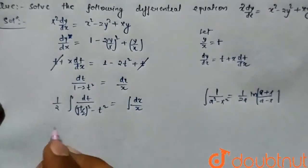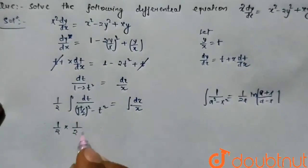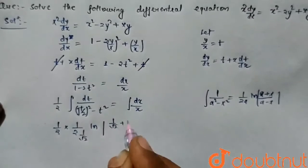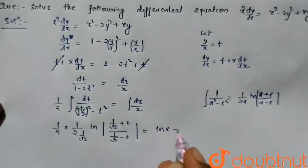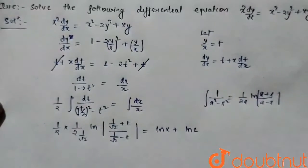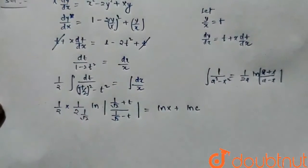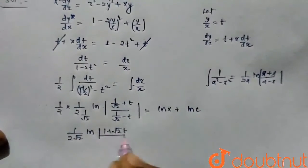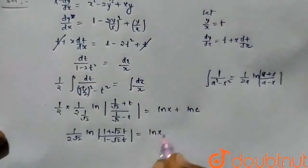So here the integration gives 1 by root whole square plus t upon 1 by root whole square minus t equals ln x plus ln c, which equals ln xc.